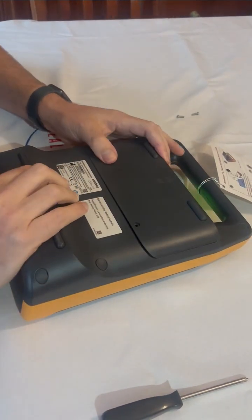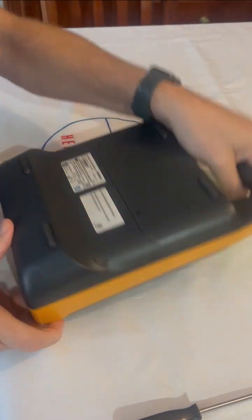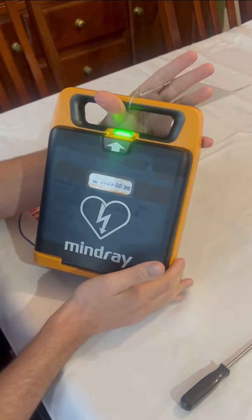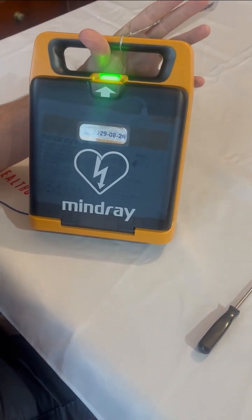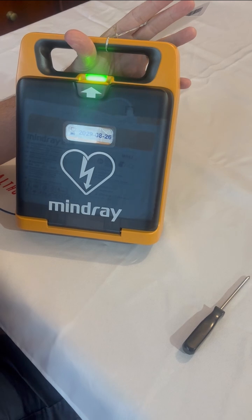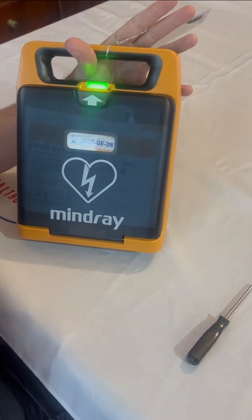Place the battery cover back in position, but do not tighten the screws yet. Once installed, the AED will automatically perform a self-test. Check the indicator light. It should display a green status, confirming the battery is correctly installed and ready for use.